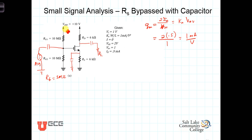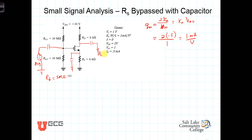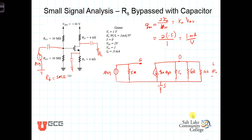To construct the model, we deactivate the DC quantities — turning the voltage source to 0 volts — which brings this resistor down into parallel with the 10k, as already discussed. It also brings R_D down to connect here, and taking the ground brings R_D in parallel with R_L. Here, then, is the small signal model.